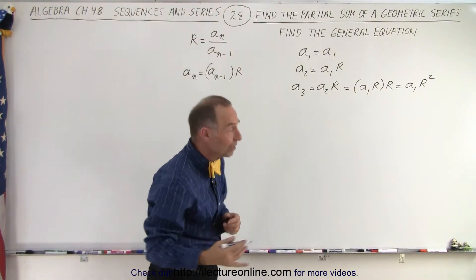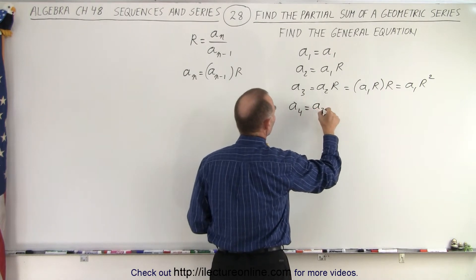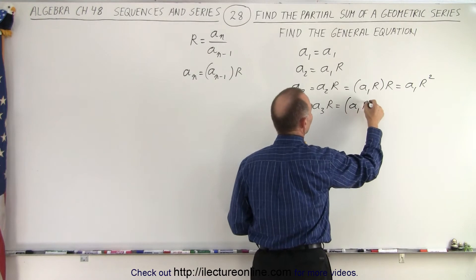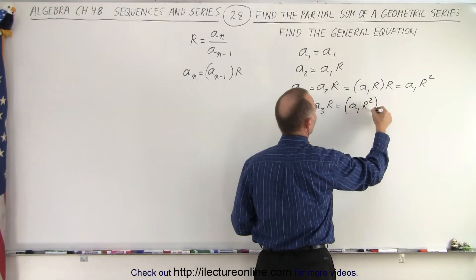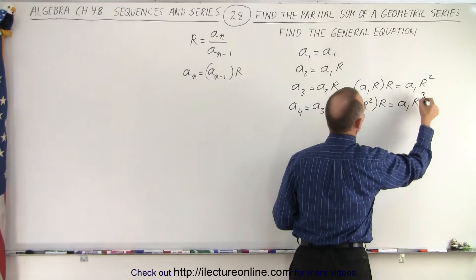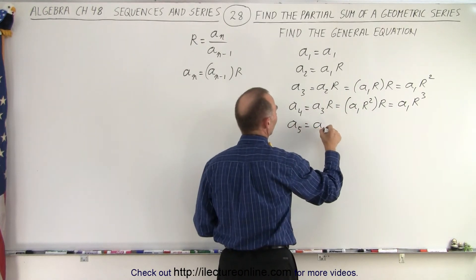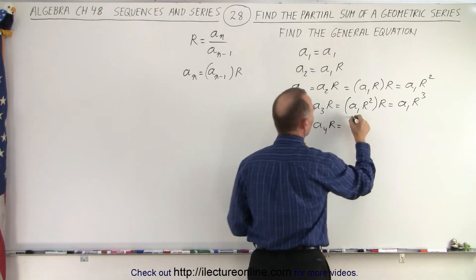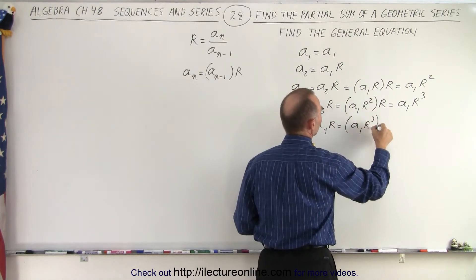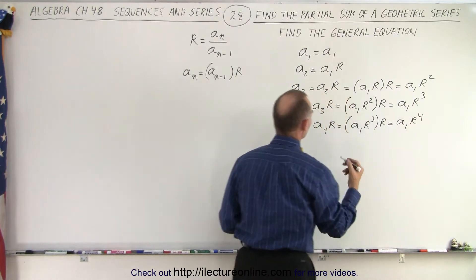Continuing this process, a sub 4 is equal to a sub 3 times the common ratio, and a sub 3 is equal to a sub 1 times R squared times R, which is equal to a sub 1 times R cubed. And a sub 5 is equal to a sub 4 times R, and a sub 4 is equal to a sub 1 R cubed times R, which is equal to a sub 1 times R to the fourth.